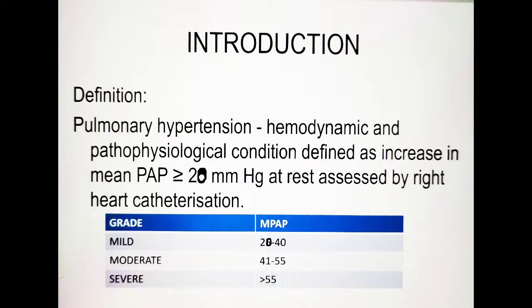There is a WHO classification of pulmonary hypertension divided into five groups. Group 1 is idiopathic pulmonary hypertension, Group 2 is pulmonary hypertension secondary to cardiac causes, Group 3 is secondary to respiratory causes, Group 4 is chronic thromboembolic pulmonary hypertension, and Group 5 is unknown cause. Evaluation can be done via ECG, chest X-ray, ABG, and pulmonary function tests.